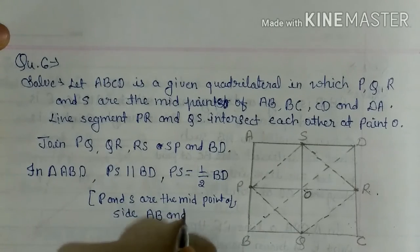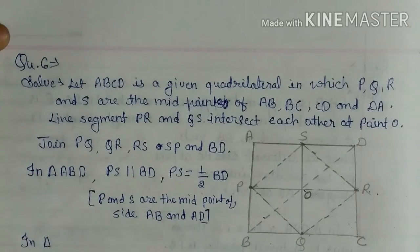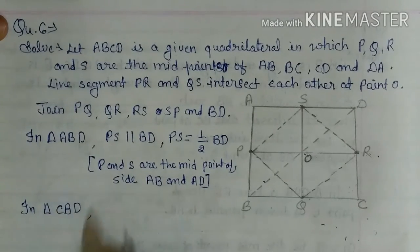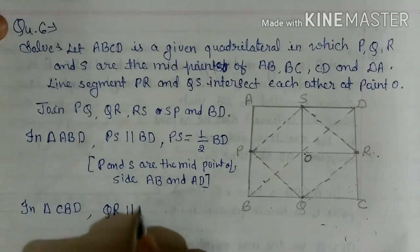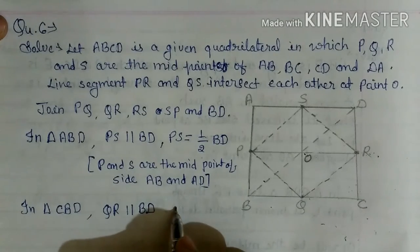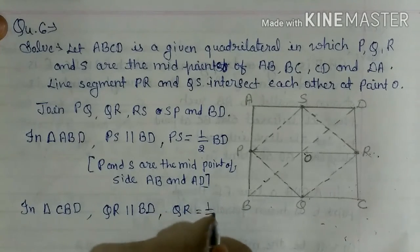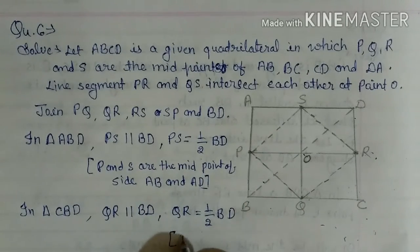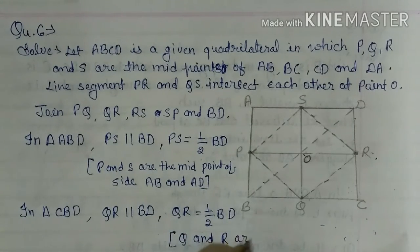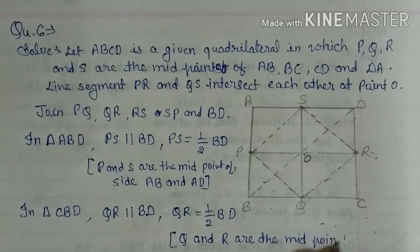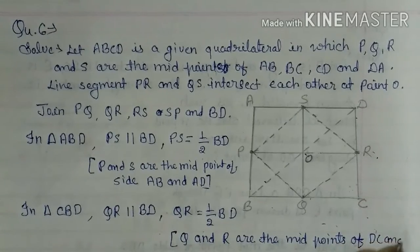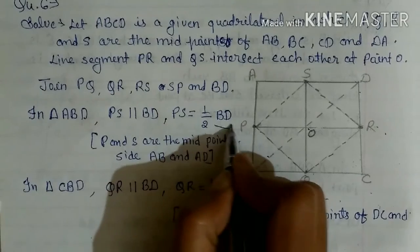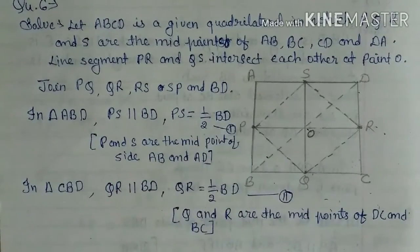Again in triangle CBD. In triangle CBD here you see QR parallel BD, QR parallel BD and QR is half of BD. You can see QR is half of BD. Here again you write Q and R are the midpoints of DC and BC. Let's call this equation 1 and this equation 2.